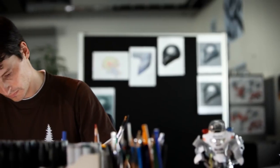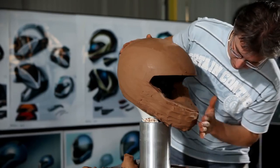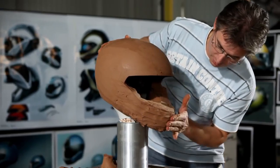Once a decision has been made as to what the helmet has to be capable of, the BMW Motorrad designers start making the first sketches. A clay model is then made by hand.